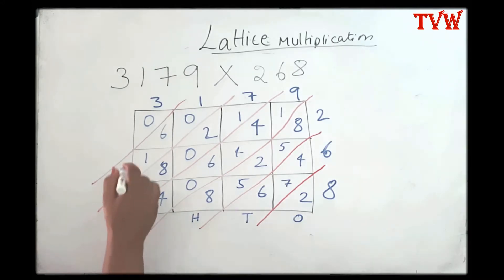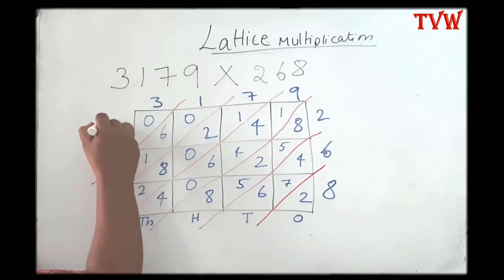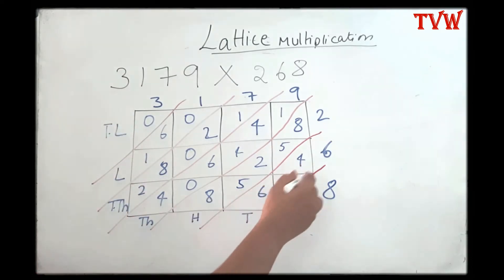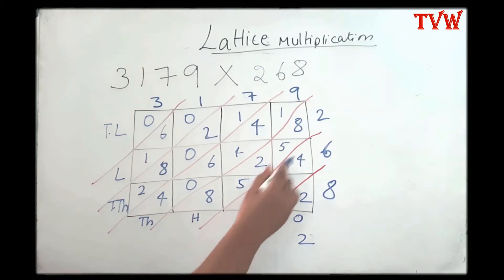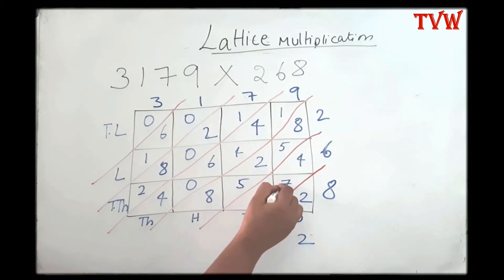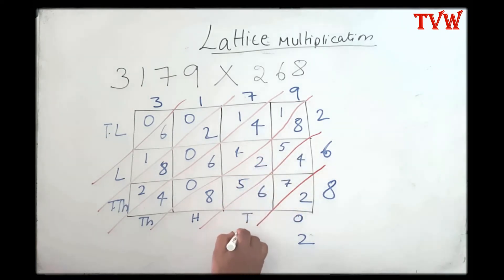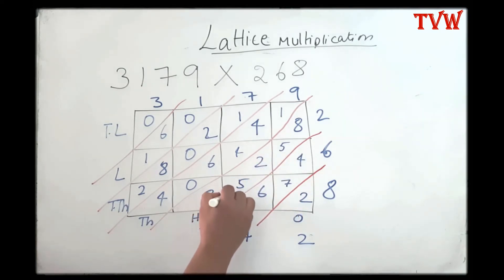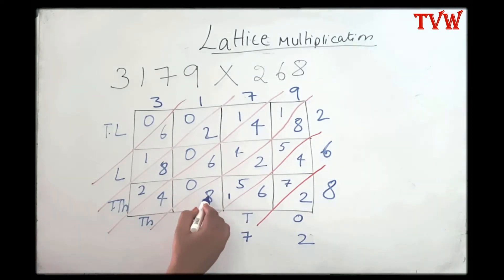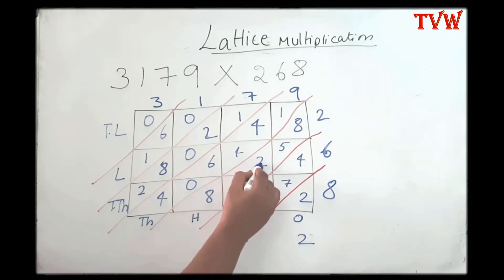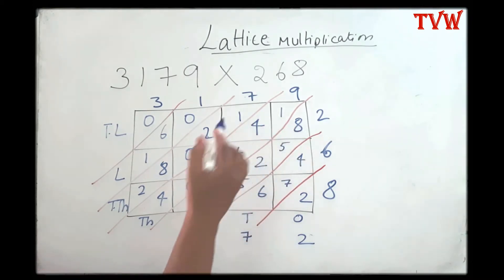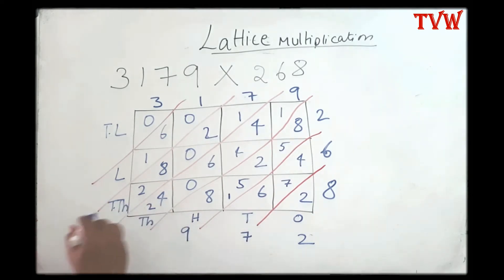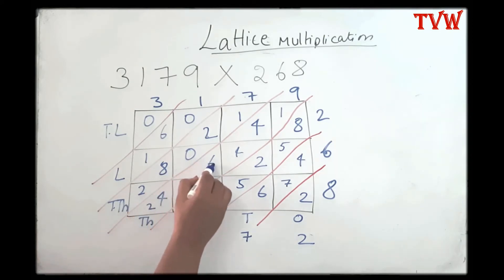This is the ones place, tens place, hundreds place, thousands place, ten thousands place, one lakh place, and ten lakhs place. Now let us add all the numbers below each slanting line. Below the first slanting line I have just two. Below the second slanting line I have six plus seven is thirteen, thirteen plus four is seventeen, so I carry over the one to the hundreds place. Eight plus one is nine, nine plus five is fourteen, fourteen plus two is sixteen, sixteen plus five is twenty-one, twenty-one plus eight is twenty-nine. So nine here and two goes to the thousands place.